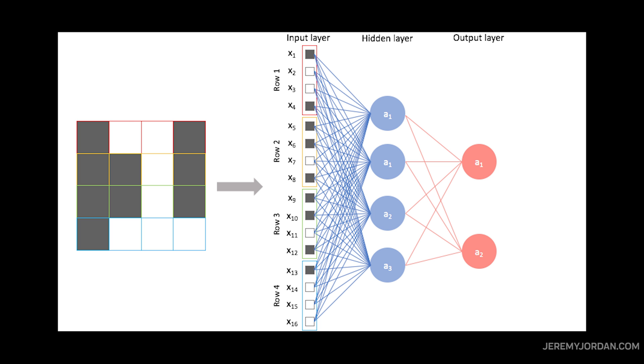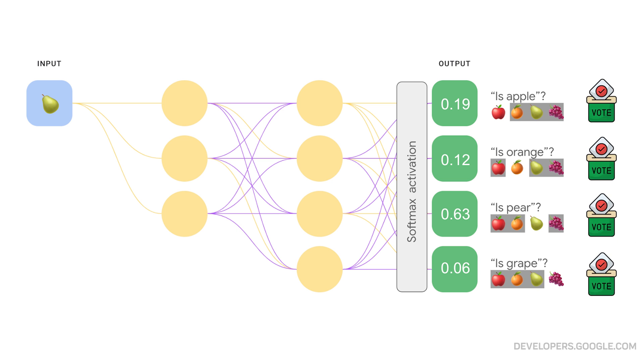The simplest neural network starts with an input layer that receives raw data, like pixels from an image, followed by hidden layers where the actual processing happens. Finally, an output layer makes predictions or classifications. Think of it like a complex voting system where each neuron contributes its opinion, weighted by its confidence.